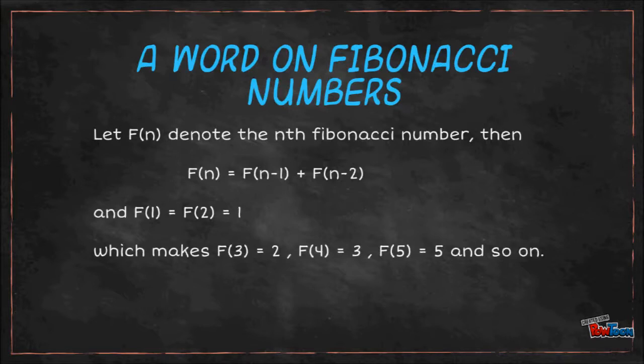For example, let's say we want to calculate the nth Fibonacci number. For those of you who are unfamiliar with Fibonacci numbers, let F(n) denote the nth Fibonacci number. Then, by definition, F(n) is equal to F(n-1) plus F(n-2). And F(1) is equal to F(2) is equal to 1.